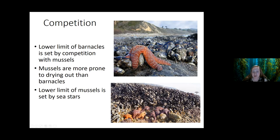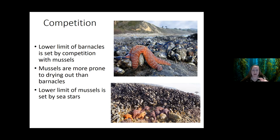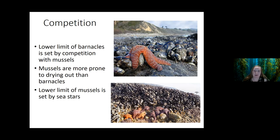The lower limit of the mussels is set by the sea stars, which you can see clearly in the bottom picture — there's almost a distinct line where the sea stars reach and the mussels end. What typically keeps sea stars from going all the way up into the mussel habitat is that they're not very fast. When the tide goes out they make their way up, maybe eat a mussel, but they can't tolerate the desiccation for long, so they return to the wetter areas, limiting their ability to decimate mussel populations.